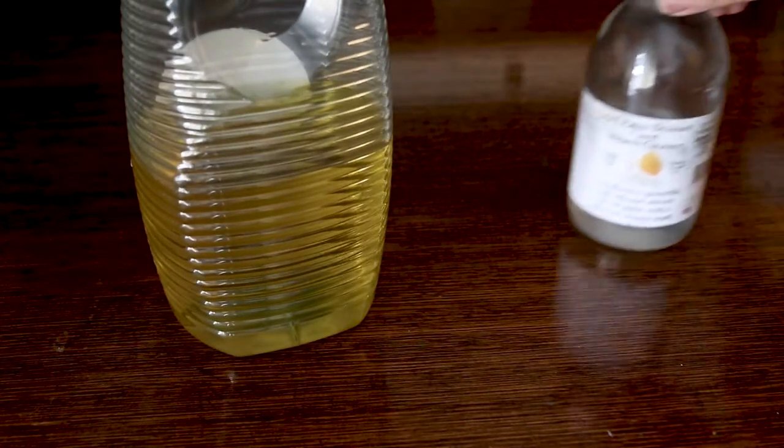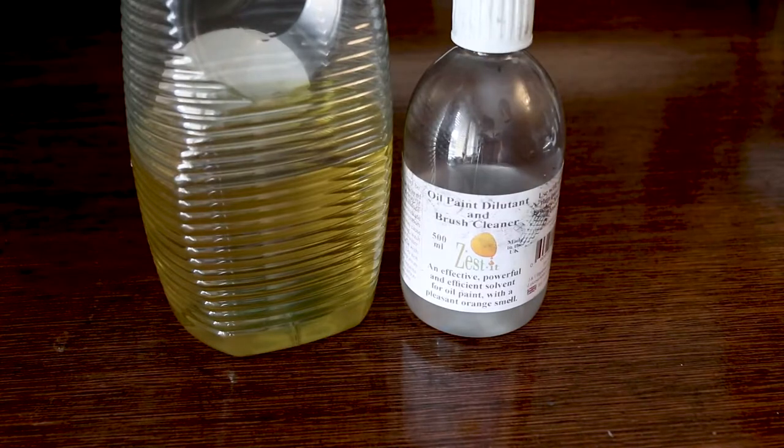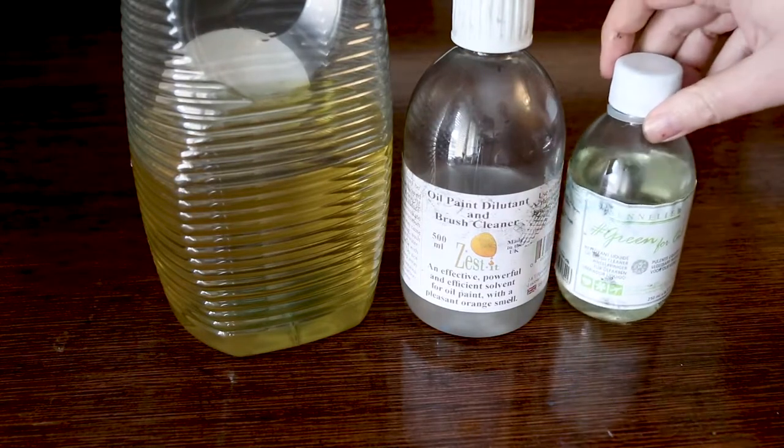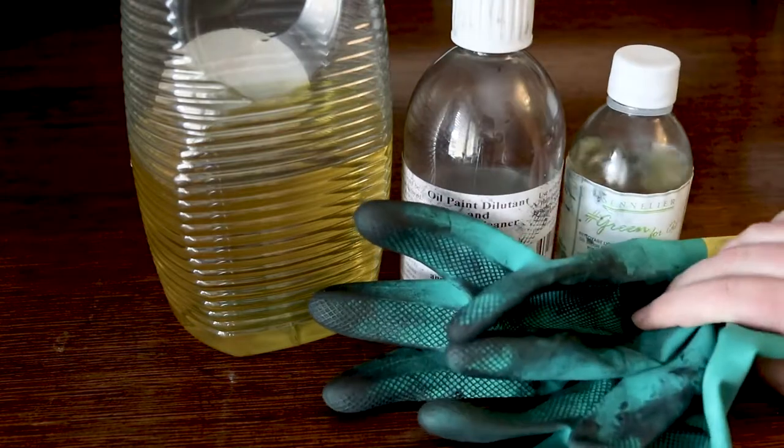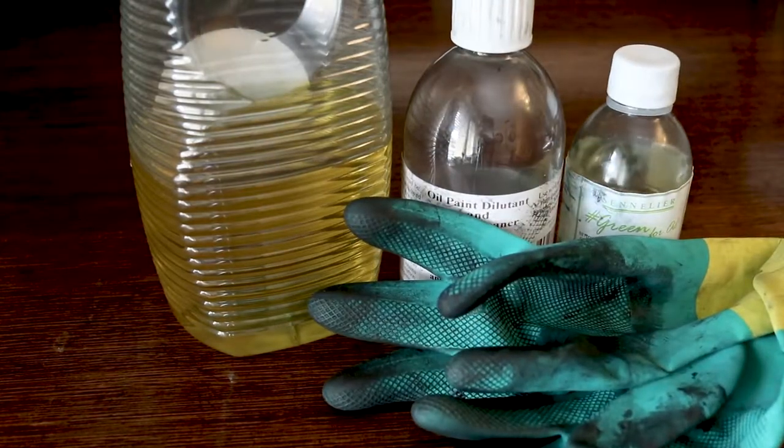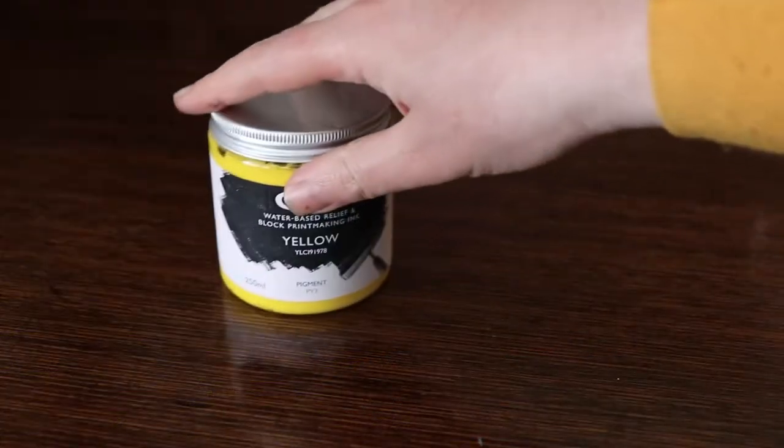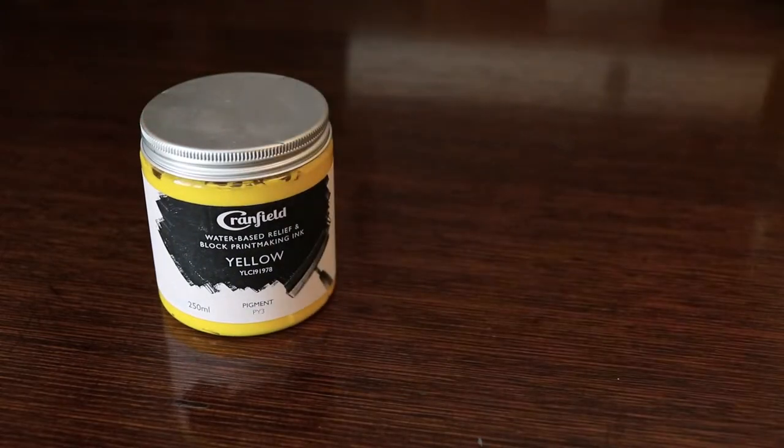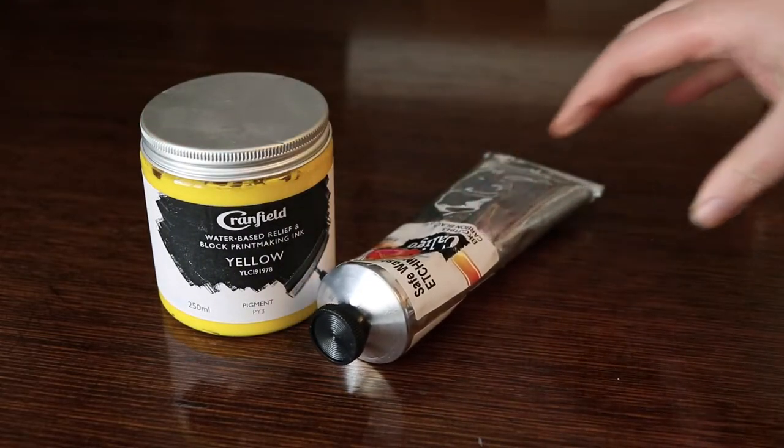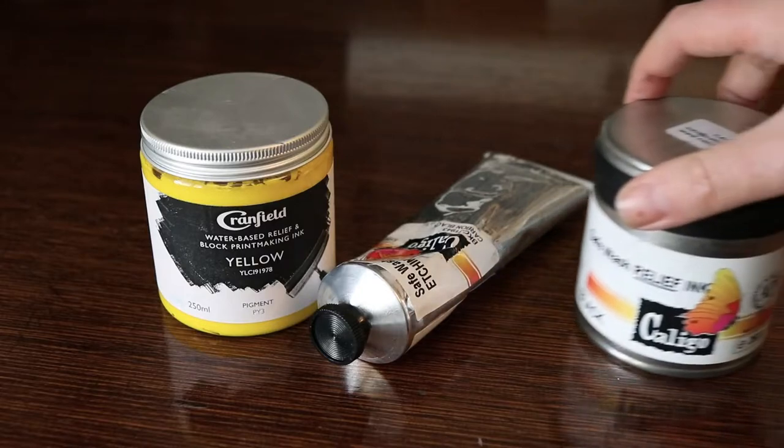If you're using oil-based ink you can clean up your tools and your block with a citrus-based cleaning solvent, and you can even clean your ink slab with vegetable oil. I like to use one of my brush cleaning solvents. If you're using water-based inks or water washable oil-based inks you can clean up with some soapy water and a cloth.